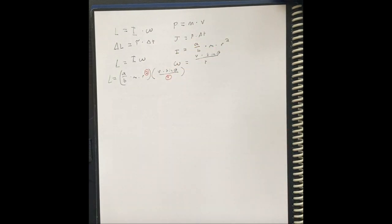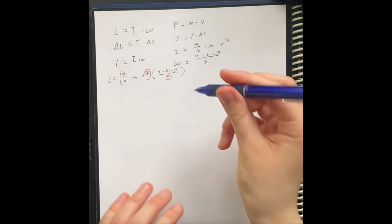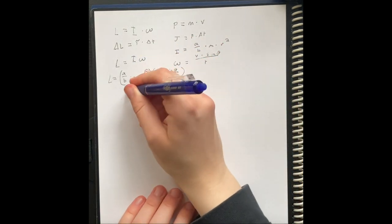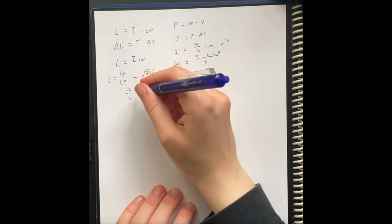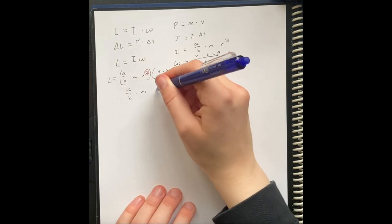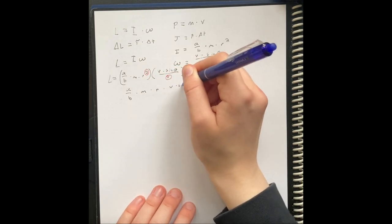This is going to simplify to be one radius. So it becomes a over b times m times r times v times sine of theta.